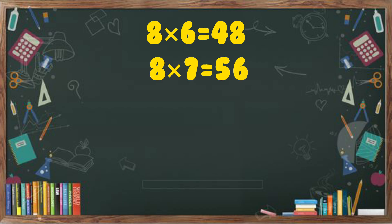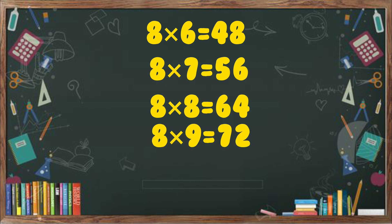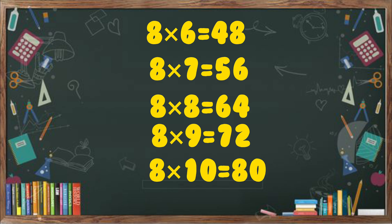8 sevens are 56. 8 eights are 64. 8 nines are 72. 8 tens are 80.